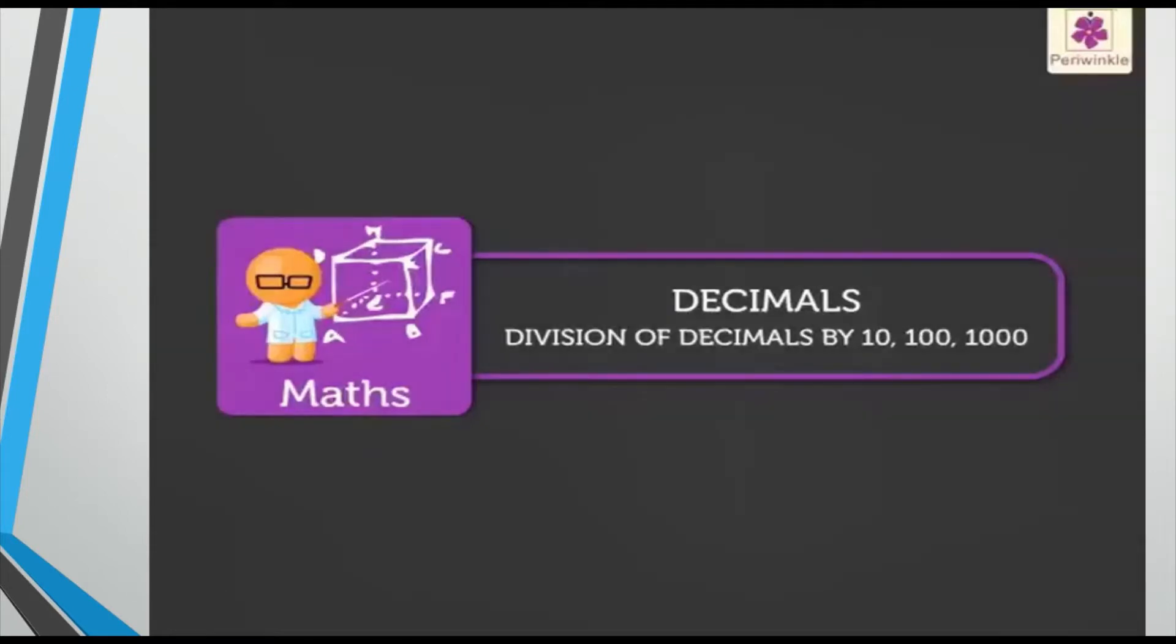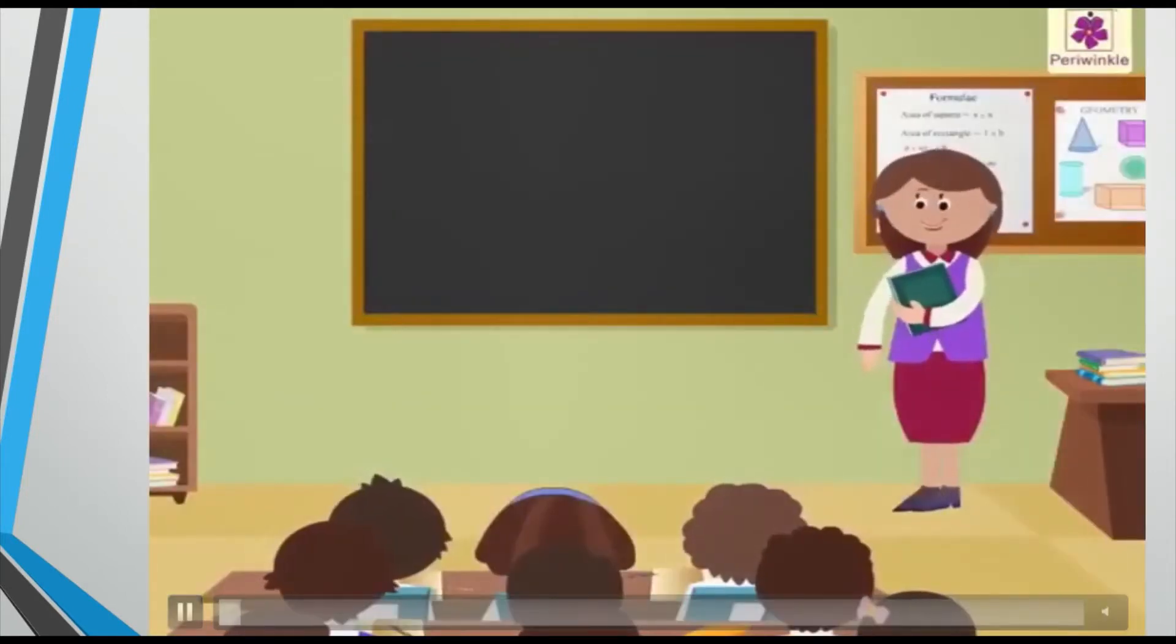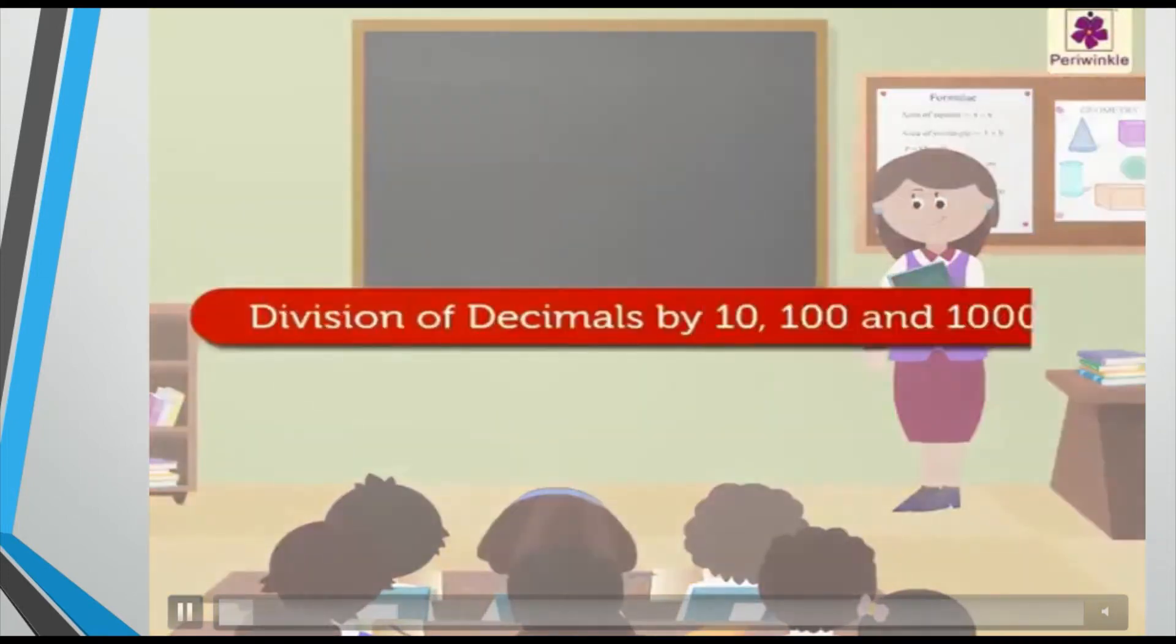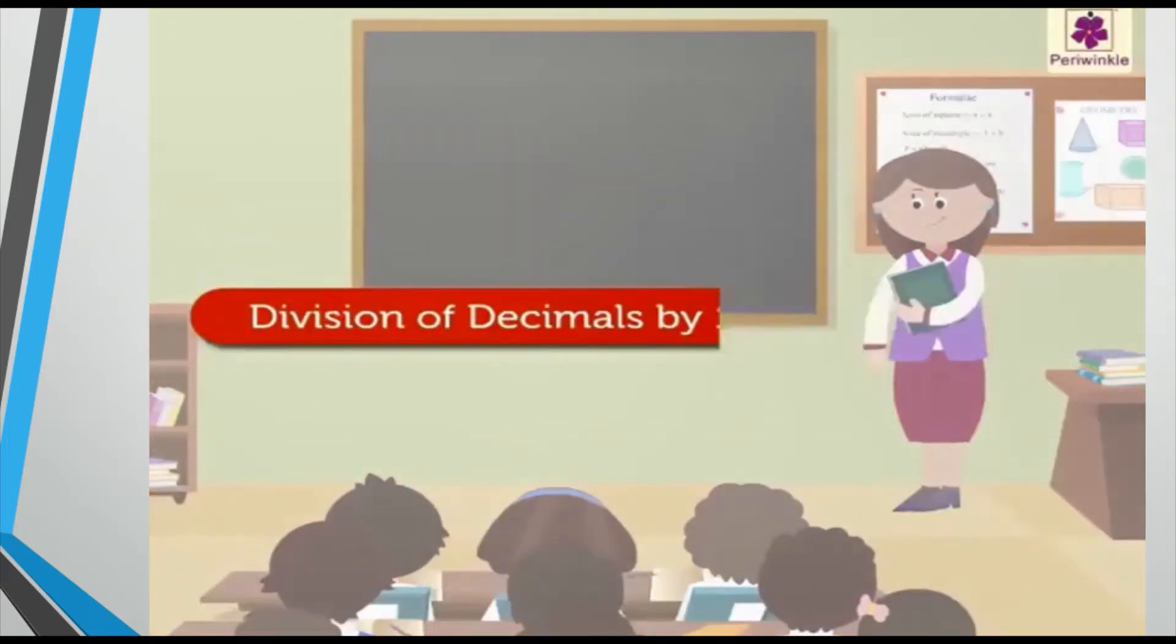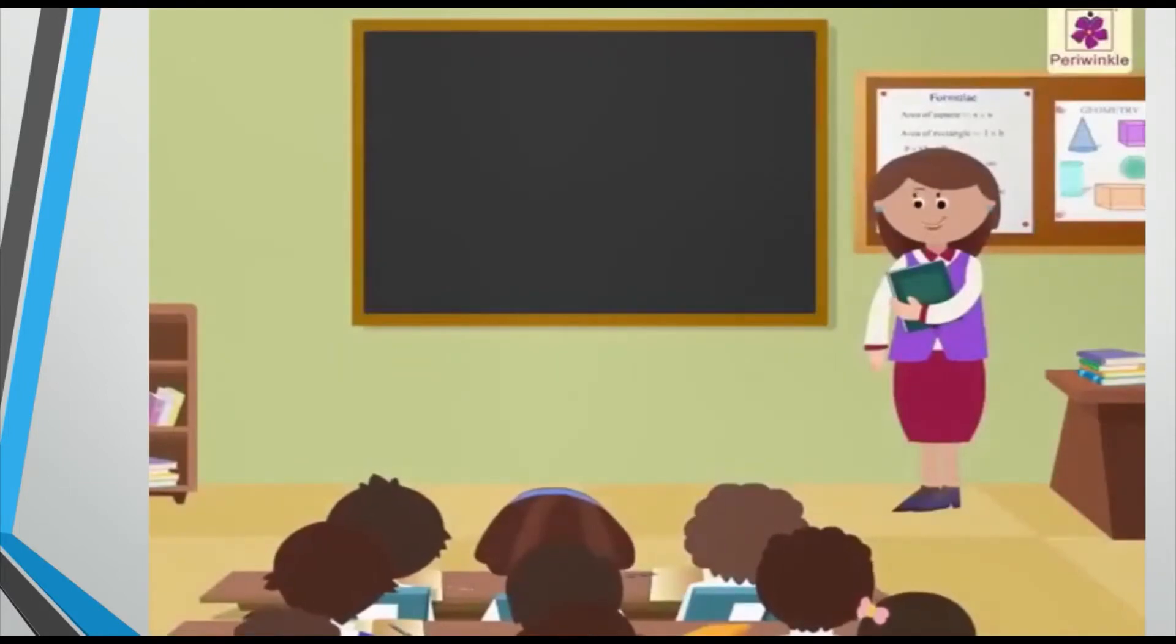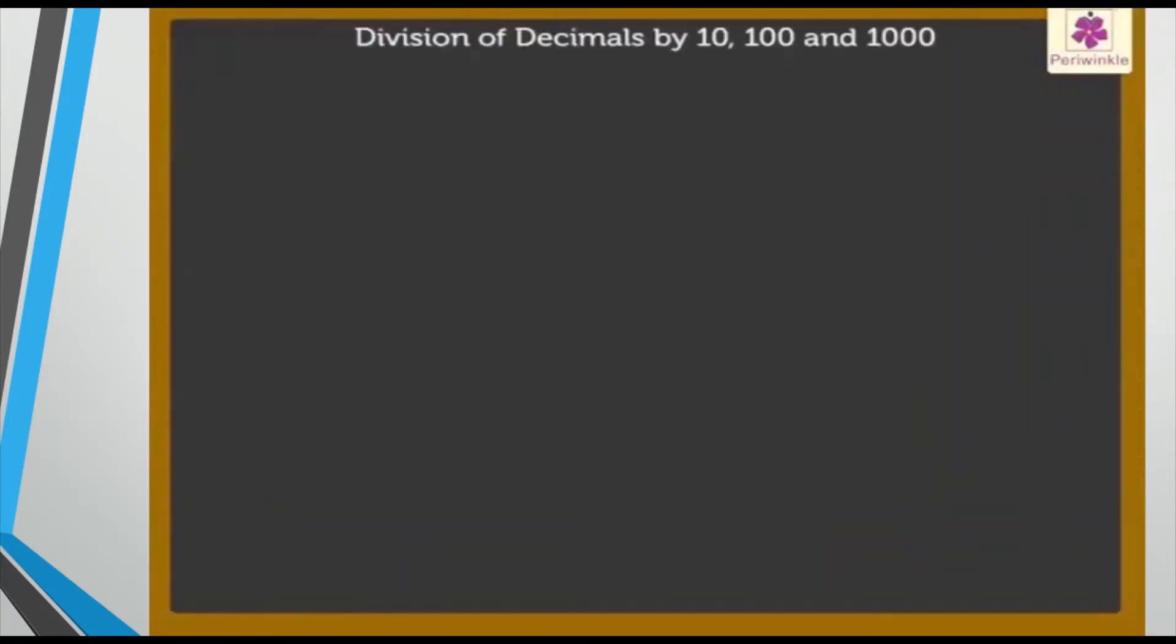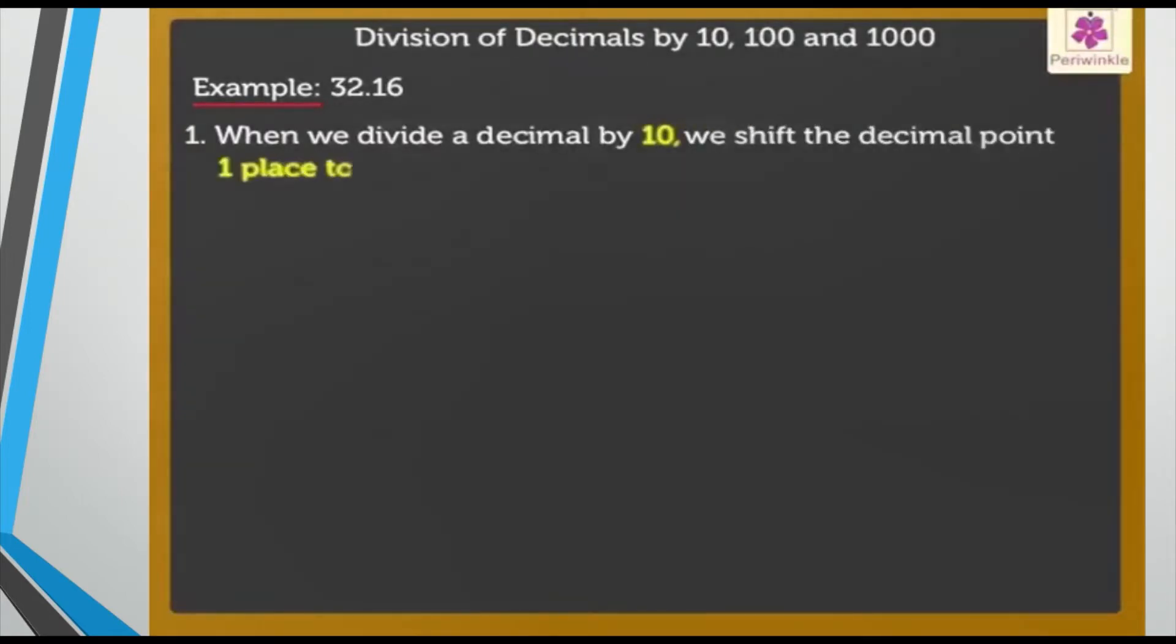How are we supposed to do this? Division of decimals - first we will do by tens, hundreds, and thousands. I am giving you an example: 32.16. When we divide the decimal by ten, we shift the decimal point one place to the left. Very easy to remember: if the value has been given to you and I ask you to divide, you just shift the decimal to your left.